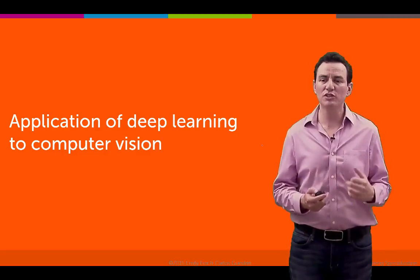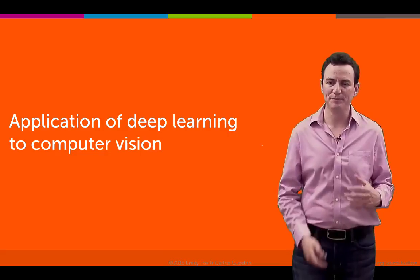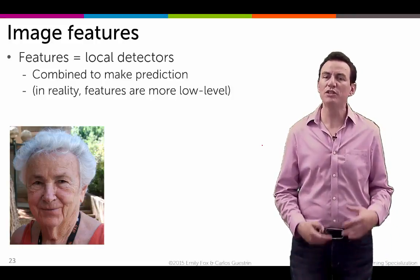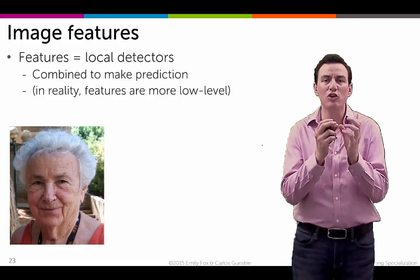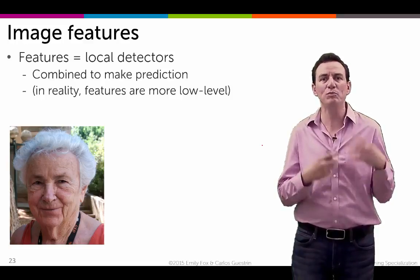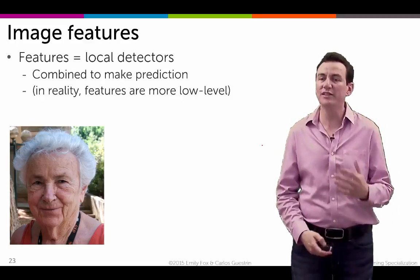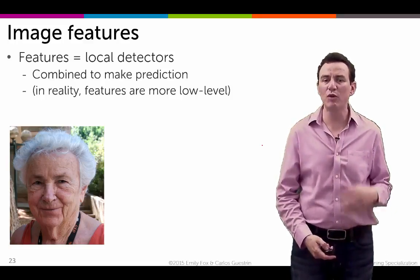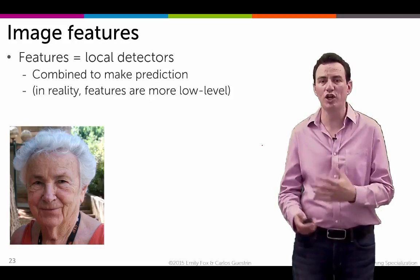To do that it's good to understand what image features are. In computer vision, image features are kind of like local detectors that get combined to make a prediction. Let's say we take this particular image. Suppose that I want to predict whether this is a face image or not a face image.